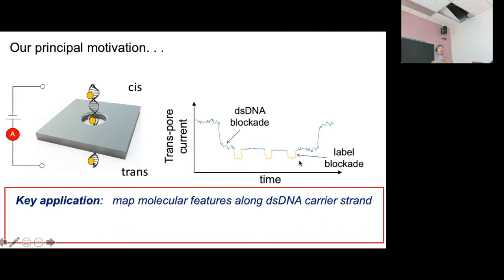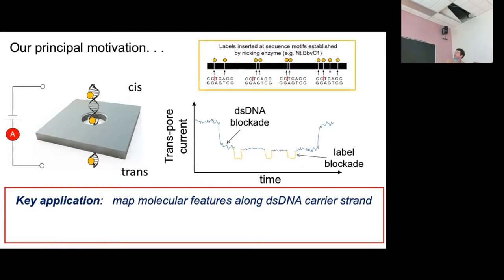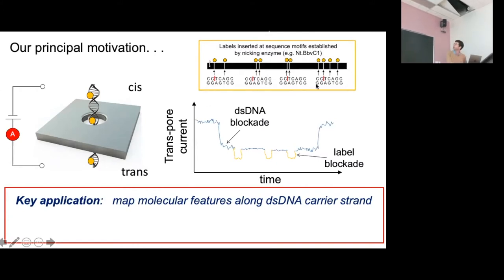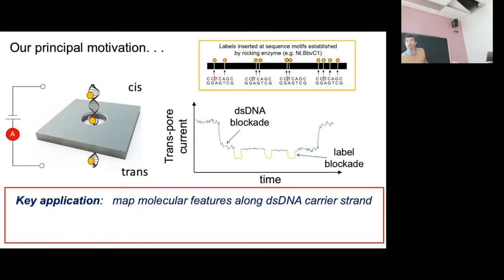These probes are sequence-specific, binding to a fixed repetitive sequence motif through the molecule of interest. This is typically done through a nicking enzyme, which creates a single-strand nick at a given motif. There's a whole library of these that hit specific sequences. You basically create a barcode along the DNA — we end up labeling a protein, in this case streptavidin, to the nick sites. So a series of bumps go through the pore creating a physical barcode.